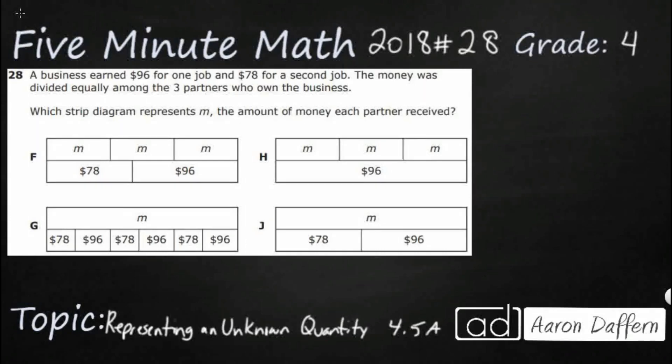Hello and welcome to 5-Minute Math. Today we are looking at the fourth grade concept of representing an unknown quantity. This is standard 4.5a in the great state of Texas and we are using item number 28 of the 2018 released STAAR test.